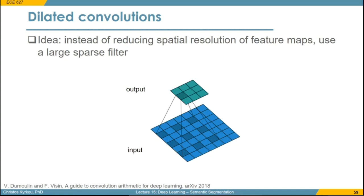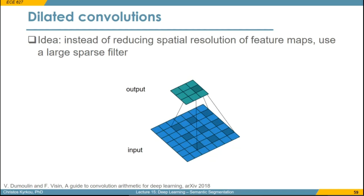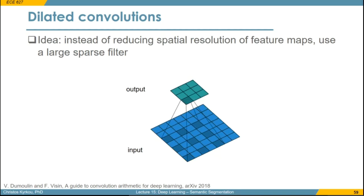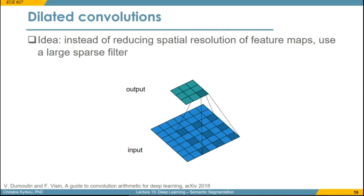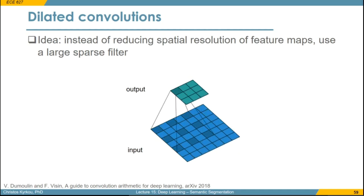Dilated convolution is quite similar to regular convolution, but the kernel values are spaced apart. In this case, we have parameters corresponding to a 3x3 kernel but applied over an area corresponding to a 5x5 kernel. This spacing — the holes between the kernels — is what gives the name, and it allows the kernel to look at a much larger receptive field while maintaining the same number of parameters.